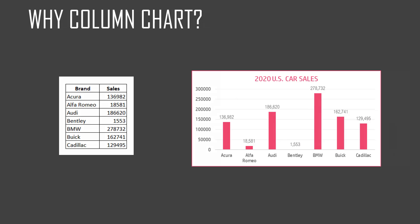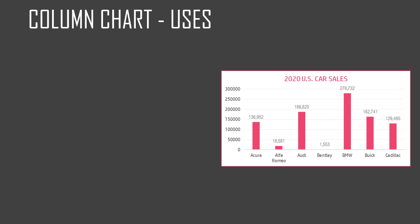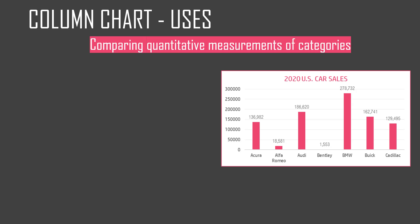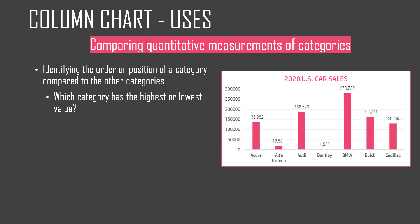When should it be used? Let's take a look at the same example — US car sales in 2020. The column chart is very effective in comparing the quantitative measurements of categories. In this example, brand name is the categorical variable, and each brand name represents a category. The primary benefit of using a column chart is that it helps us identify the order or position of a category compared to others — we can immediately say BMW is the highest in sales and Bentley is the lowest.